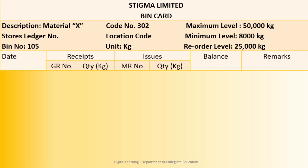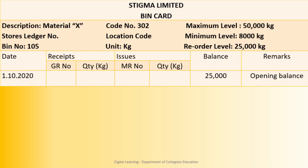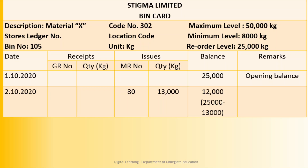Now let us post the transactions into bin card number 105. On 1st October 2020, opening stock of 25,000 kg is shown in the balance column with remark 'opening balance.' On 2nd, there is an issue on MR No. 80 shown under issue column — MR number 80, quantity 13,000 kgs. We had a balance of 25,000 kgs, out of which 13,000 kgs have been issued, so the balance is only 12,000 kgs.